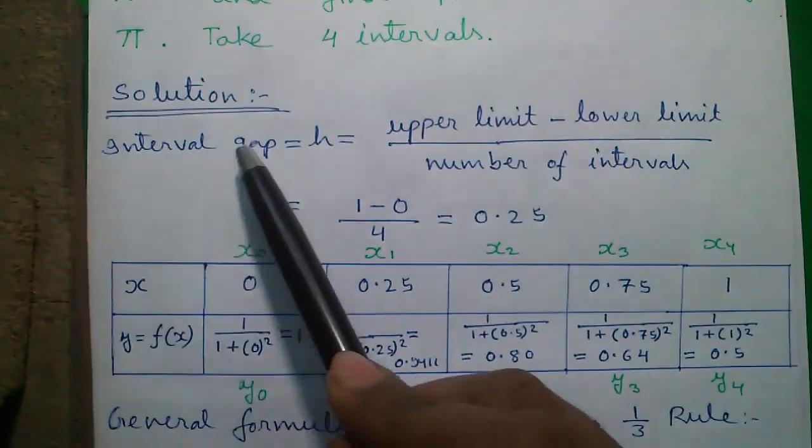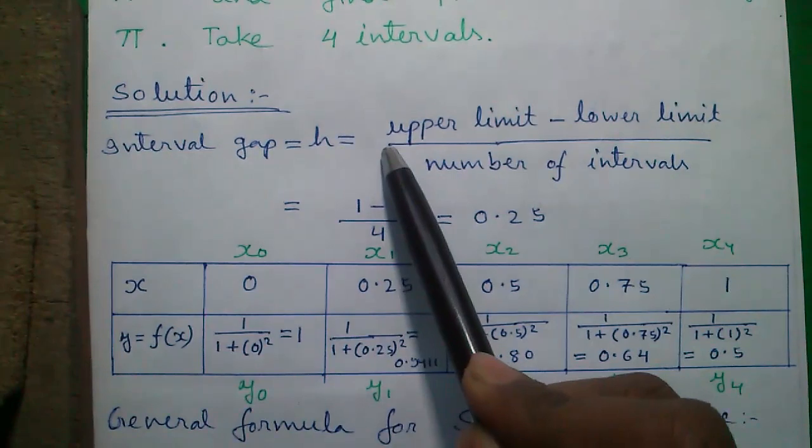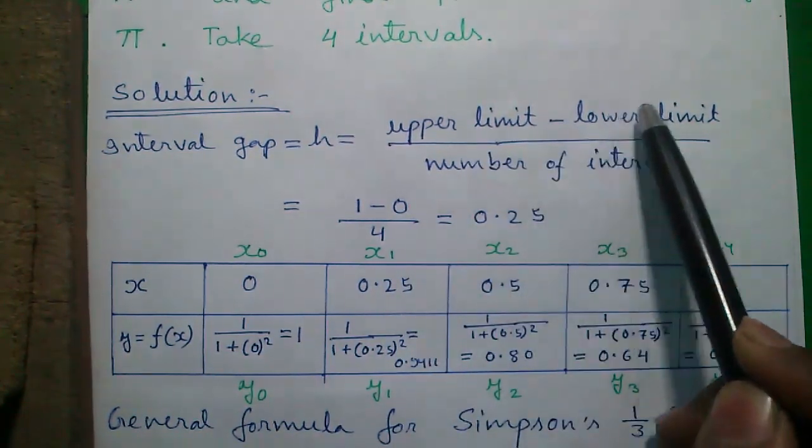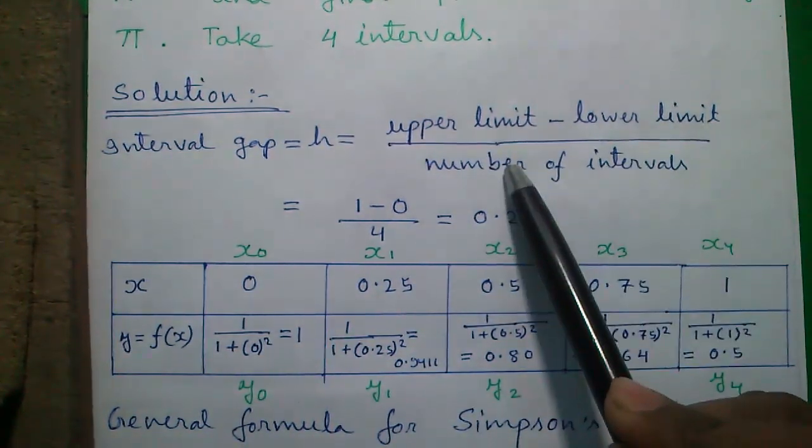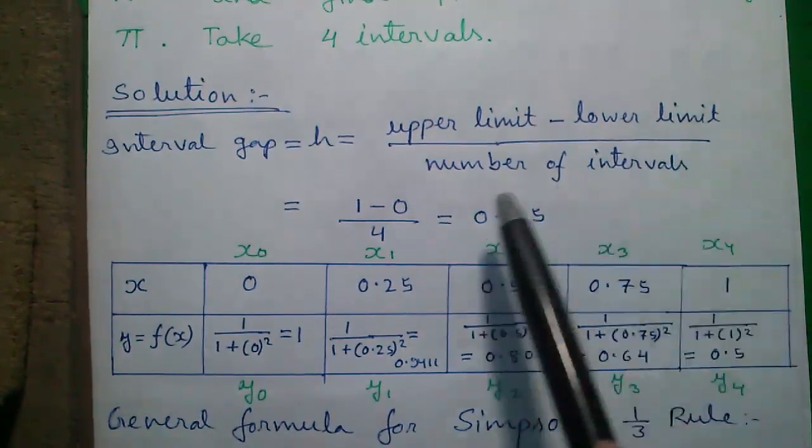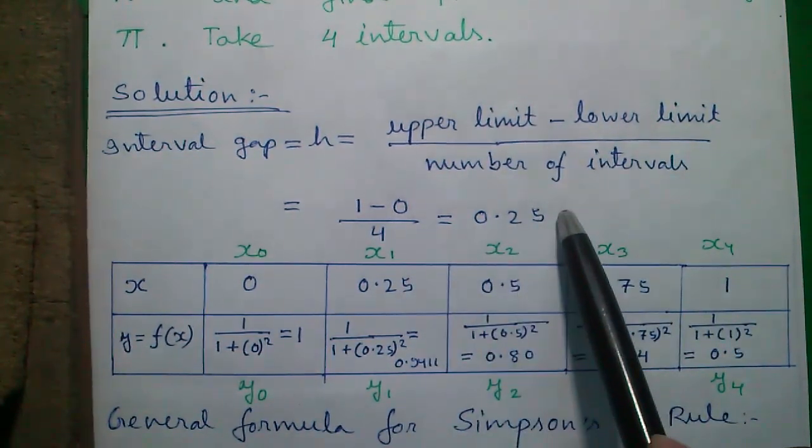Here is our solution. Interval gap or h equals to upper limit which is 1 minus lower limit which is 0 divided by number of intervals which is 4. So it will give you 0.25.